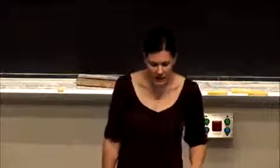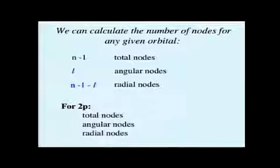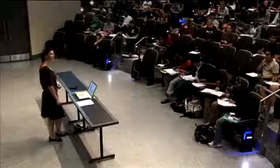Let's look now at a p orbital, so how many total nodes do we have here? Yep, so one total node, two minus one is one.